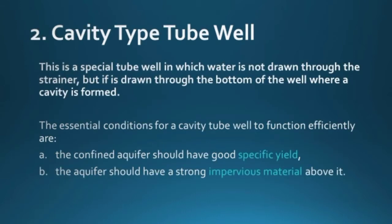The cavity type tube well is a special tube well in which water is not drawn through a strainer, but through the bottom of the well where a cavity — a gap — is formed. To install a cavity type tube well, two conditions are needed: first, the confined aquifer should have good specific yield; and second, the aquifer should have a strong impervious material above it, such as a rock strata or a highly thick layer of clay.